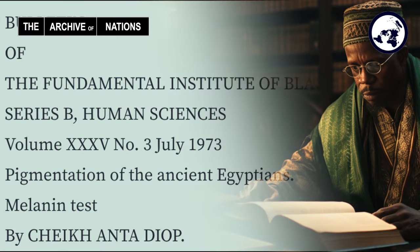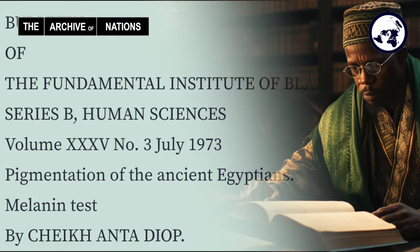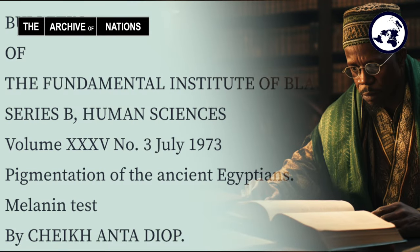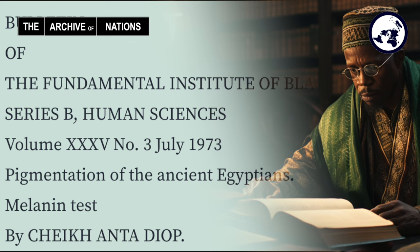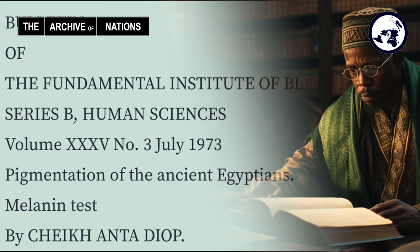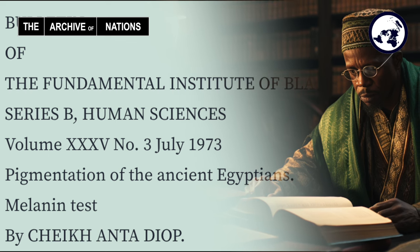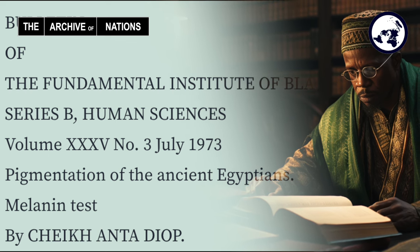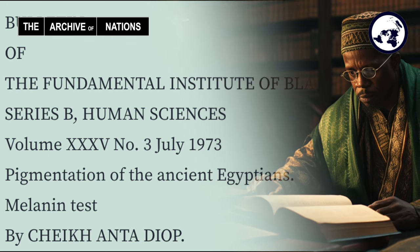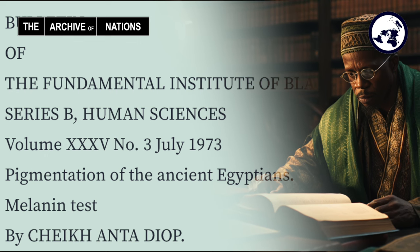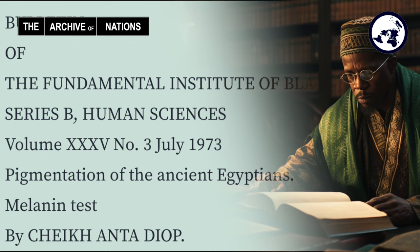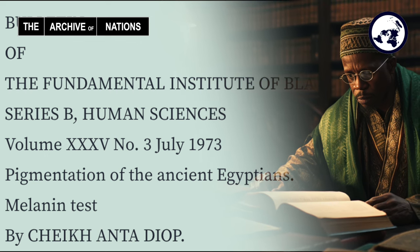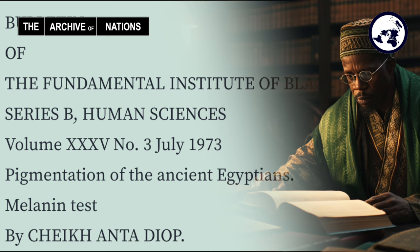This webisode focuses on the work found in the Bulletin of the Fundamental Institute of Black Africa, Series B: Human Sciences, Volume XXXV, Number 3, July 1973, entitled 'Pigmentation of the Ancient Egyptians: The Melanin Test' by Cheikh Anta Diop.